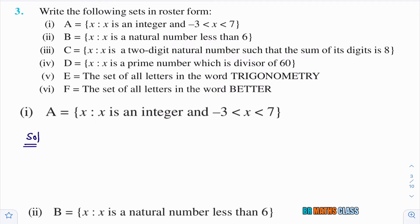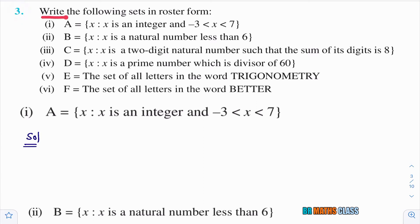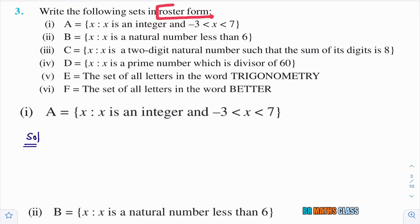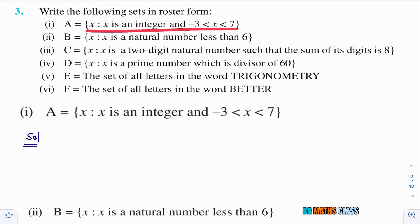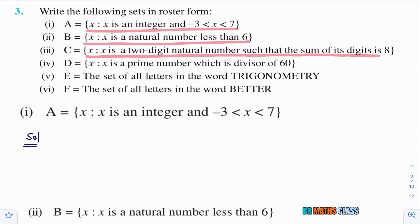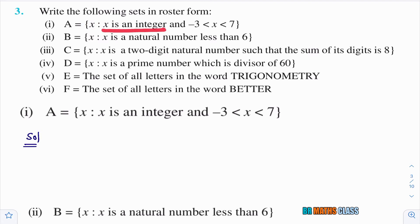Question 3: Write the following sets in roster form. All these sets are given in set builder form, and we need to list all elements. First bit: A = {x : x is an integer, −3 < x < 7}. Integers are 0, ±1, ±2, ±3, and so on. The integer x must lie strictly between −3 and 7.